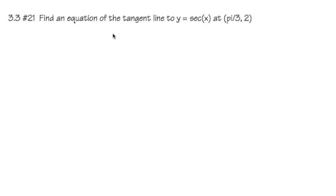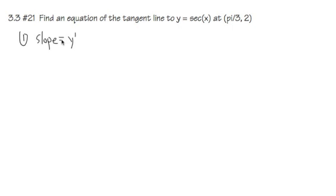Whenever we are trying to write an equation of a line, we need two things. First is the slope, second is the point. Let's focus on the slope first. We are trying to get the slope of the tangent line. The slope of the tangent line is exactly the derivative — that's y prime.